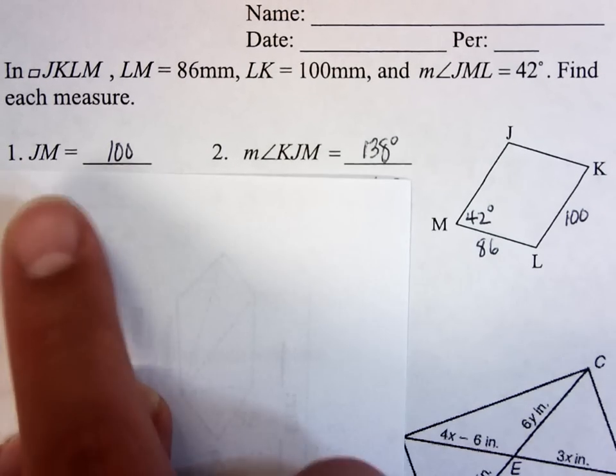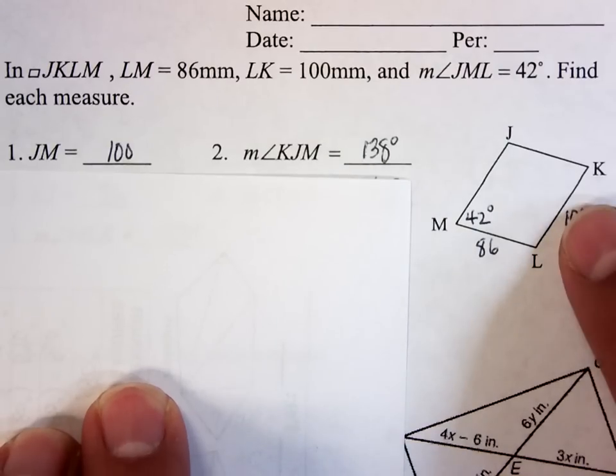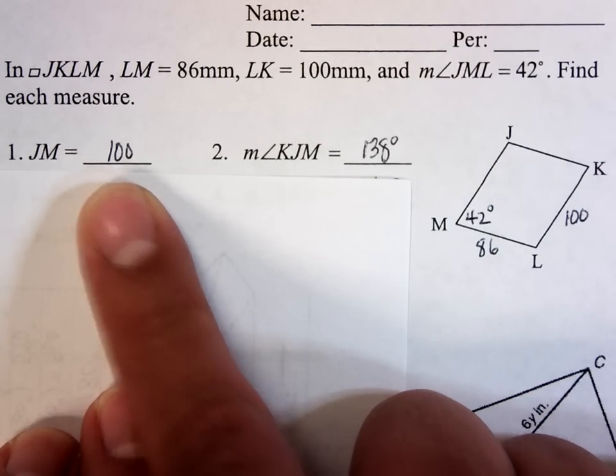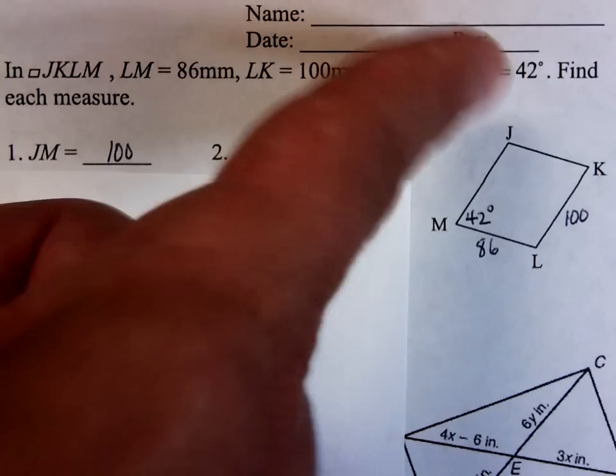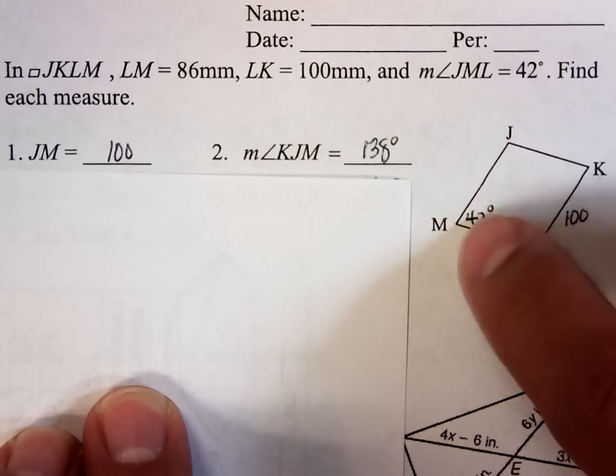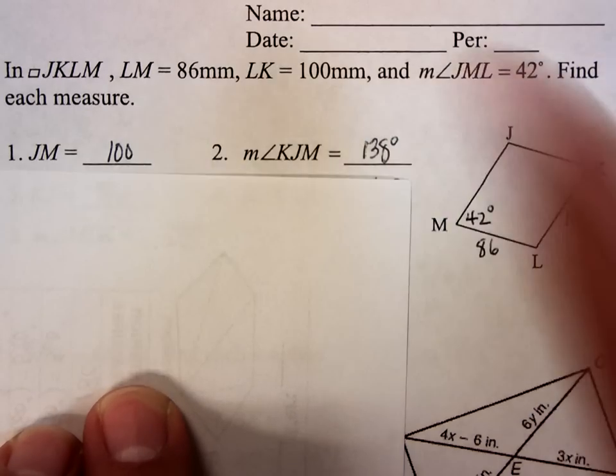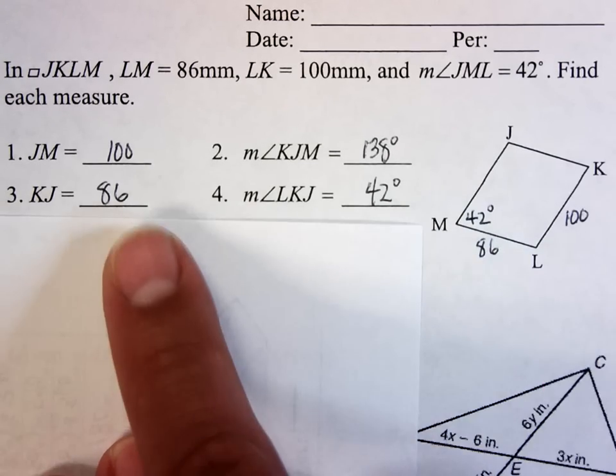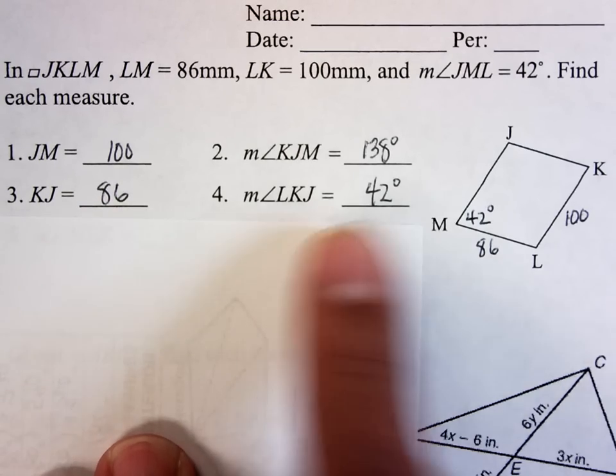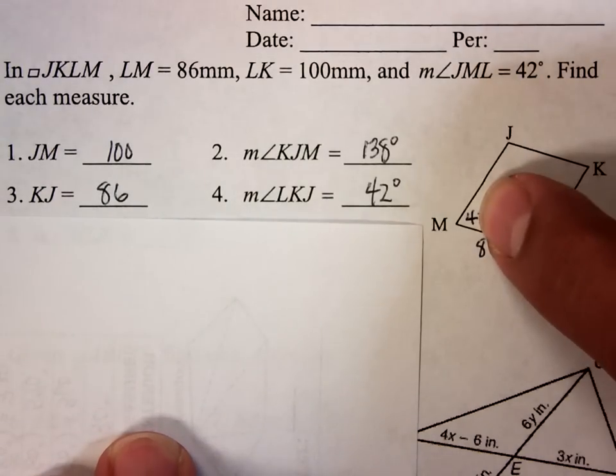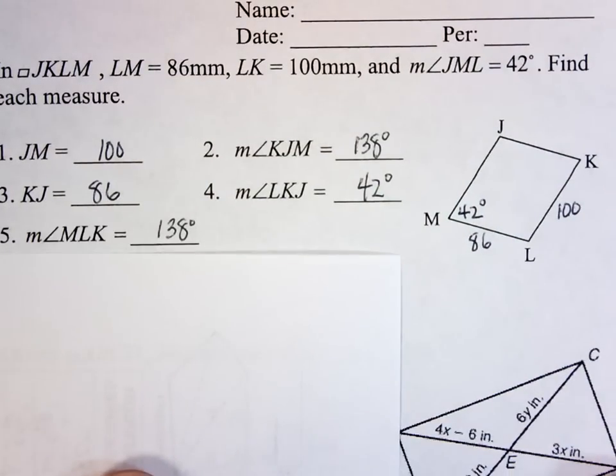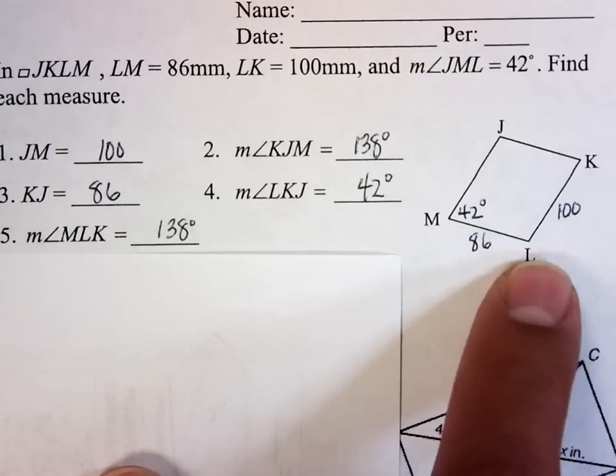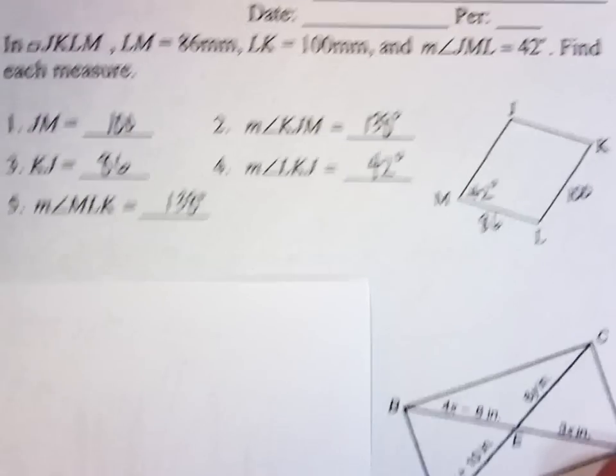So how long is JM? Well, JM is opposite from LK. If I have a parallelogram, my opposite sides are congruent. So JM is 100. KJM, K, J, M, they want this angle right here. These are consecutive angles, so they must be supplementary. So this angle must be 138 degrees. KJ is opposite from ML. If ML is 86, KJ must also be 86. LKJ, this angle right here, is opposite from angle M, so it's also 42 degrees. And MLK, if that's 42 degrees, these are consecutive angles, so this must be 138 degrees.